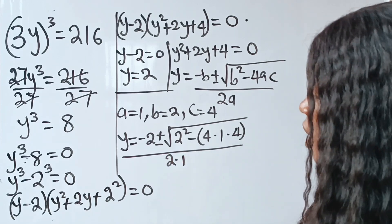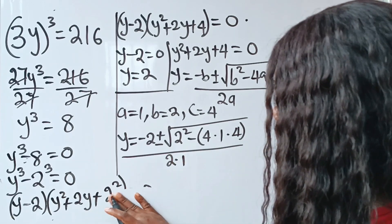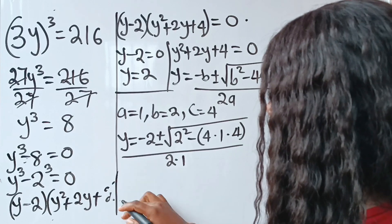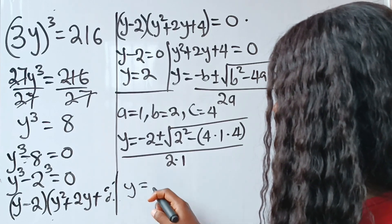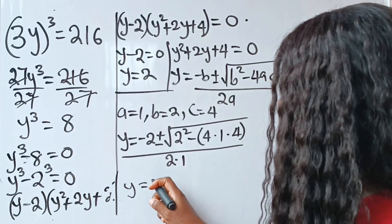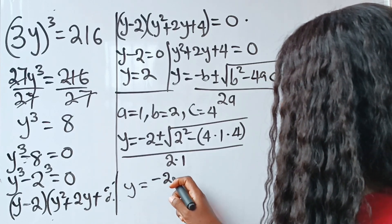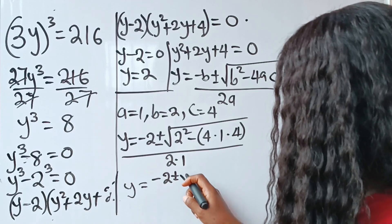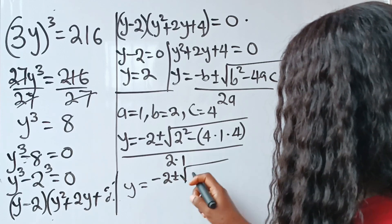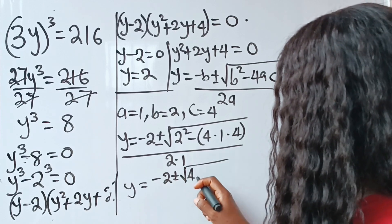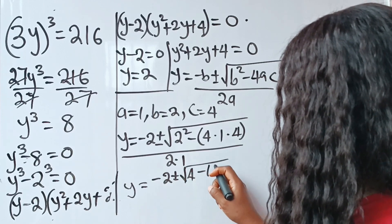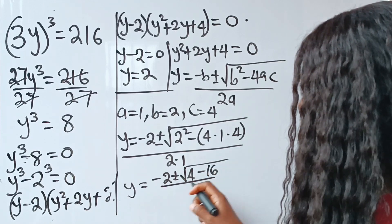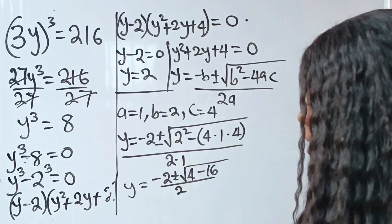So we can say that y equals minus 2 plus or minus the square root of 4 minus 16, divided by 2.